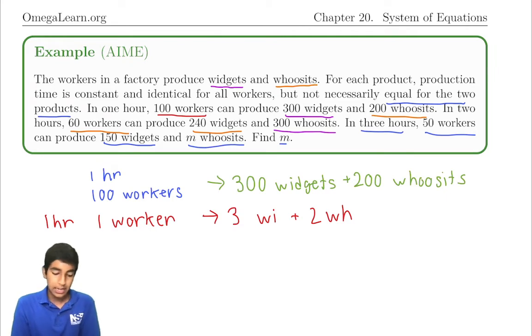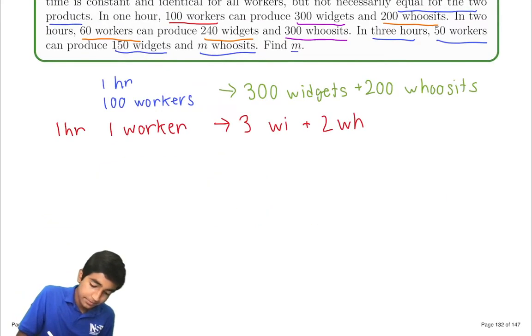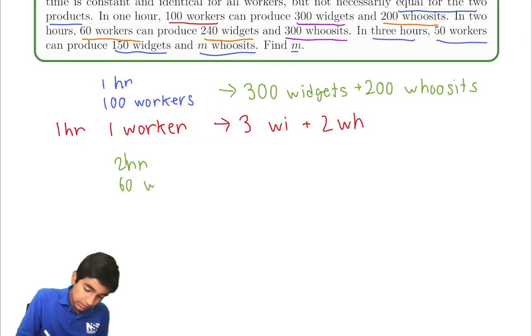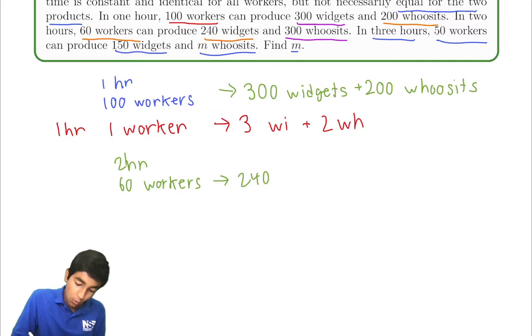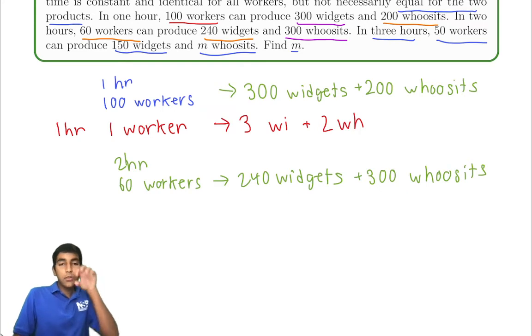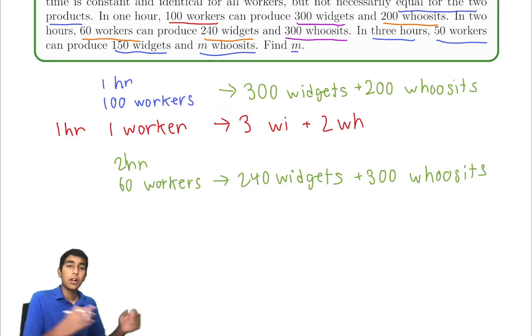Second condition. In two hours, 60 workers can make 240 widgets and 300 whoosits. This is 2 hours, 60 workers. In total, 60 workers for one hour, 60 workers for another hour. It's basically 120 times the amount of work one worker can do in an hour.